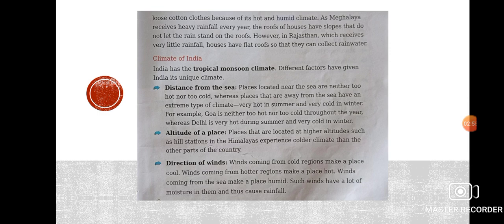When the wind is coming from the desert side, it will make the surrounding regions hot. Whereas when it is coming from mountainous regions, it will make the place cold. Winds that come from the seaside contain moisture — water vapors — and can cause rainfall in that particular region.